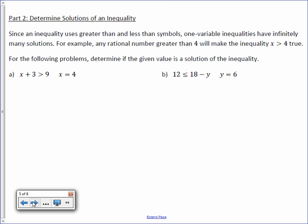Since an inequality uses greater than and less than symbols, one variable inequalities have infinitely many solutions. For example, any rational number greater than 4 will make the inequality x is greater than 4 true. So the solution could have an infinite amount of answers. 5 could be an answer, 6, 7 is greater than 4, 8, 300, 1 million. You can continue on infinitely.